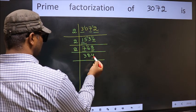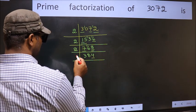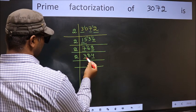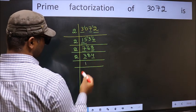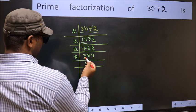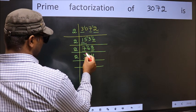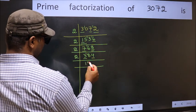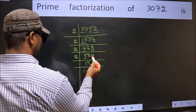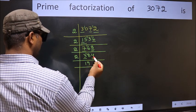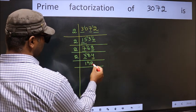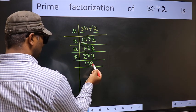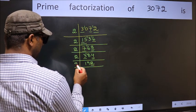Now the last digit 4, so take 2. First number 3 — a number close to 3 in the 2 table is 2 times 1 is 2. 3 minus 2 is 1, carried forward 18. When do we get 18 in the 2 table? 2 times 9 is 18. The other number 4 — when do we get 4 in the 2 table? 2 times 2 is 4. Now the last digit 2, so take 2.